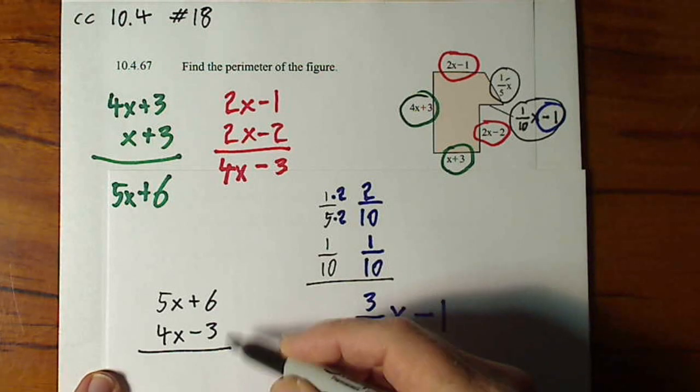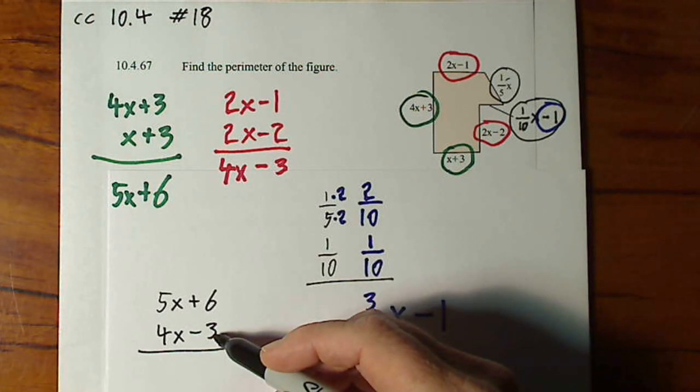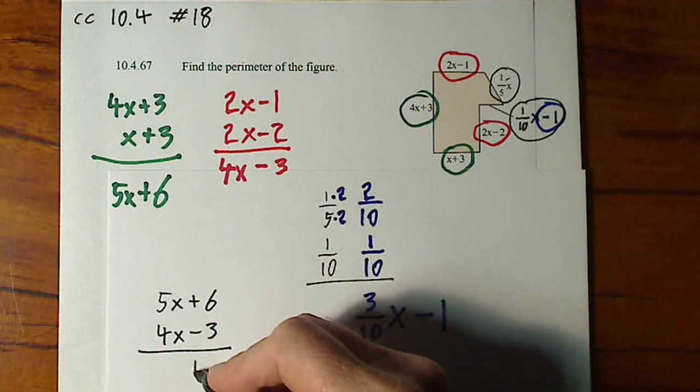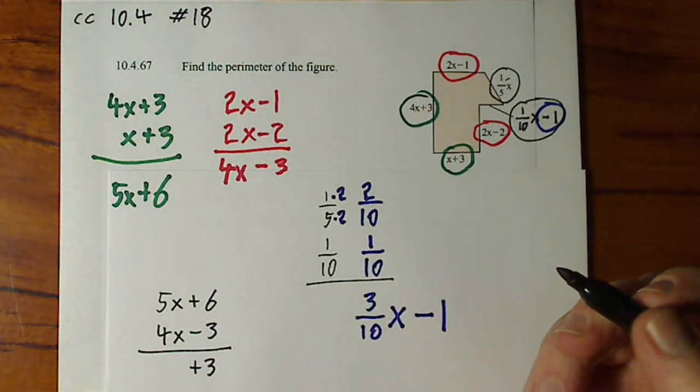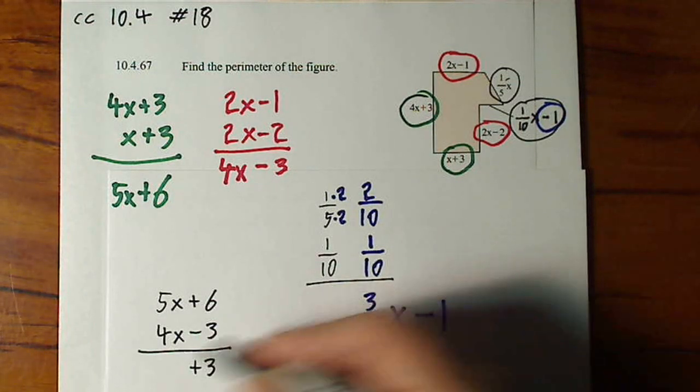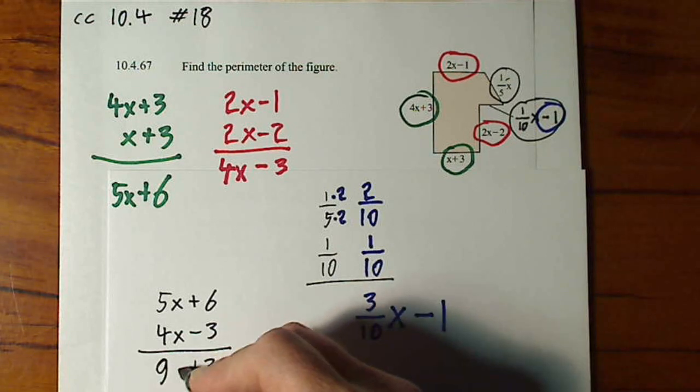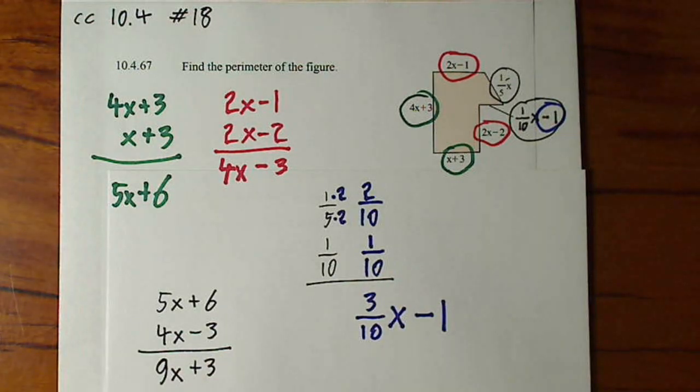When I combine these, a positive 6 and negative 3, that yields a positive 3. 5x and 4x, that yields 9x. And we still have to combine this 9x plus 3 with 3 tenths x minus 1.